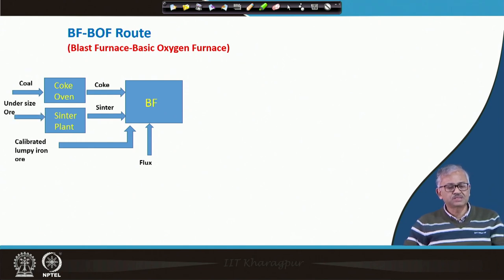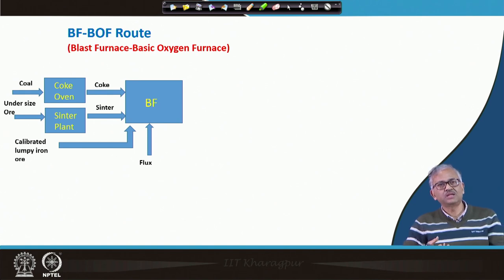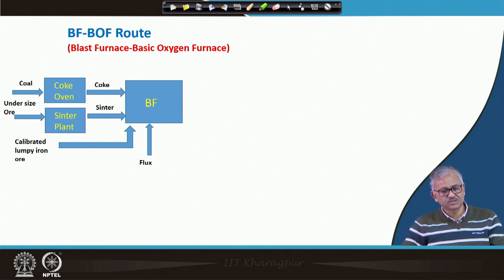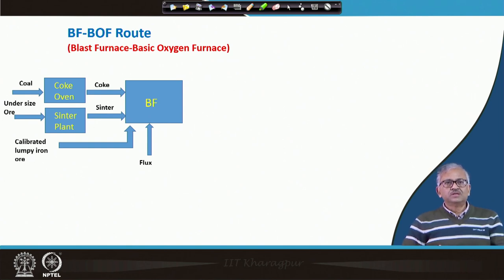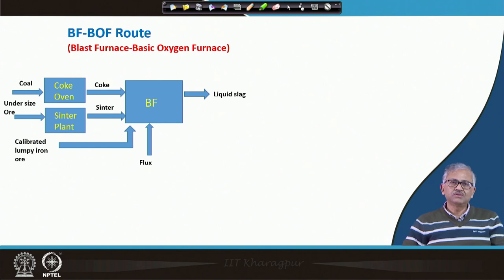If you have undersized ore, you can sinter it — that is, agglomerate it — to get a better burden material. Sinter is better than lumpy ore in terms of both strength and reactivity. The outputs from the blast furnace are liquid slag and liquid iron.